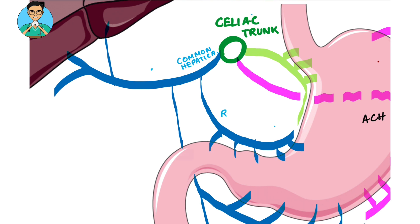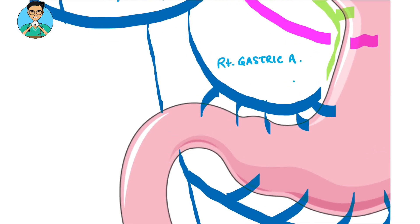The second branch of the common hepatic artery goes down towards the duodenum from the stomach, and hence it is known as the gastroduodenal artery.